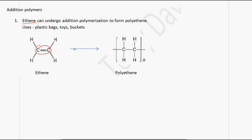When ethene undergoes an addition polymerization reaction, we end up with polyethene. What happens is that the double bond changes into a single bond. Notice the difference.